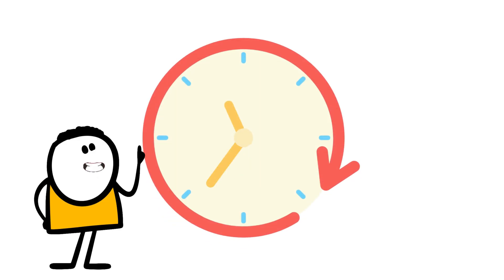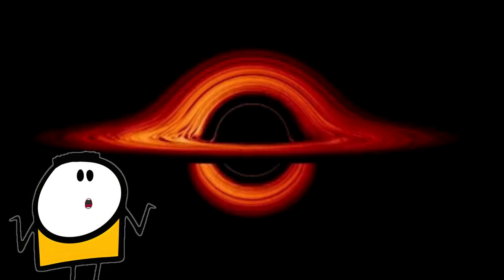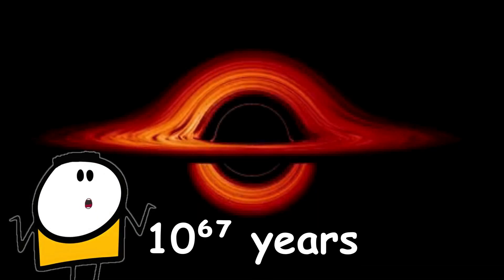Over time, a ridiculously long time, the black hole shrinks. And eventually, evaporates. A black hole the size of our sun would take 10 to the power 67 years to vanish.